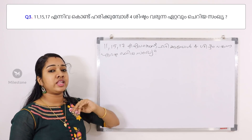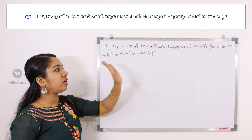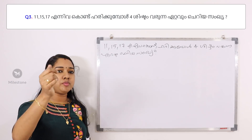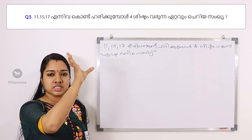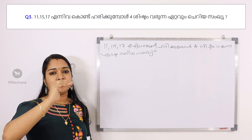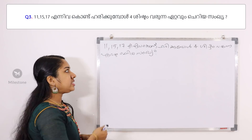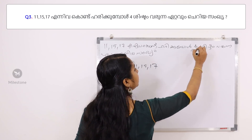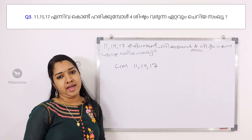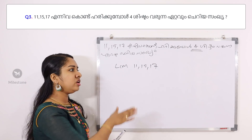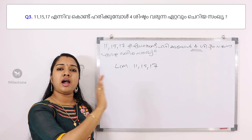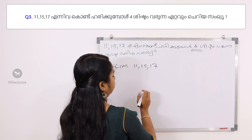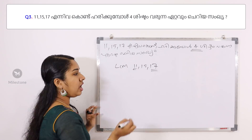If you have 3 numbers, you can use 3 numbers. But now these 3 numbers are 4 numbers. If you have 3 numbers, you can use the first number and the common difference. So, what is this? If you have 3 numbers, you can use the same method as LCM. The LCM is 11, 15, 16.